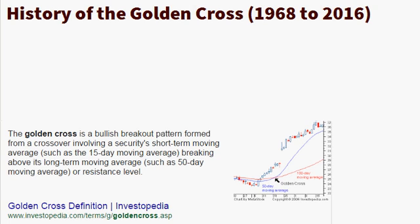History of the Golden Cross, 1968 to 2016. The Golden Cross is a bullish breakout pattern formed from a crossover involving a security's short-term moving average, such as a 15-day moving average, breaking above its long-term moving average, such as a 50-day moving average or resistance level. In simpler terms, it's a smaller number over a larger one — 15 over 50, 50 over 200, 20 over 100, and so on.